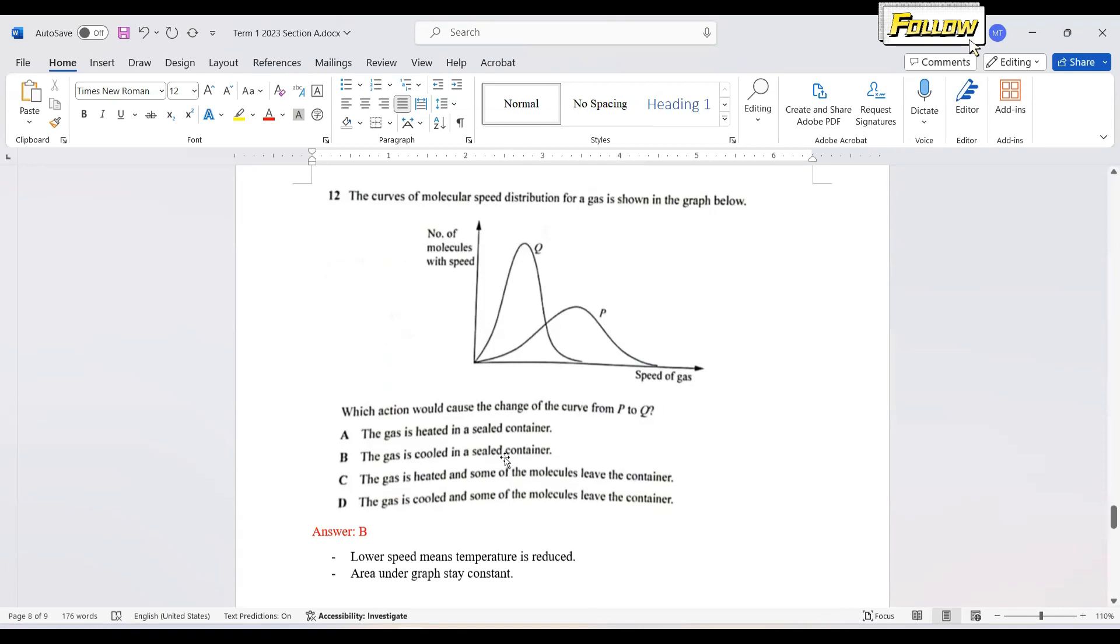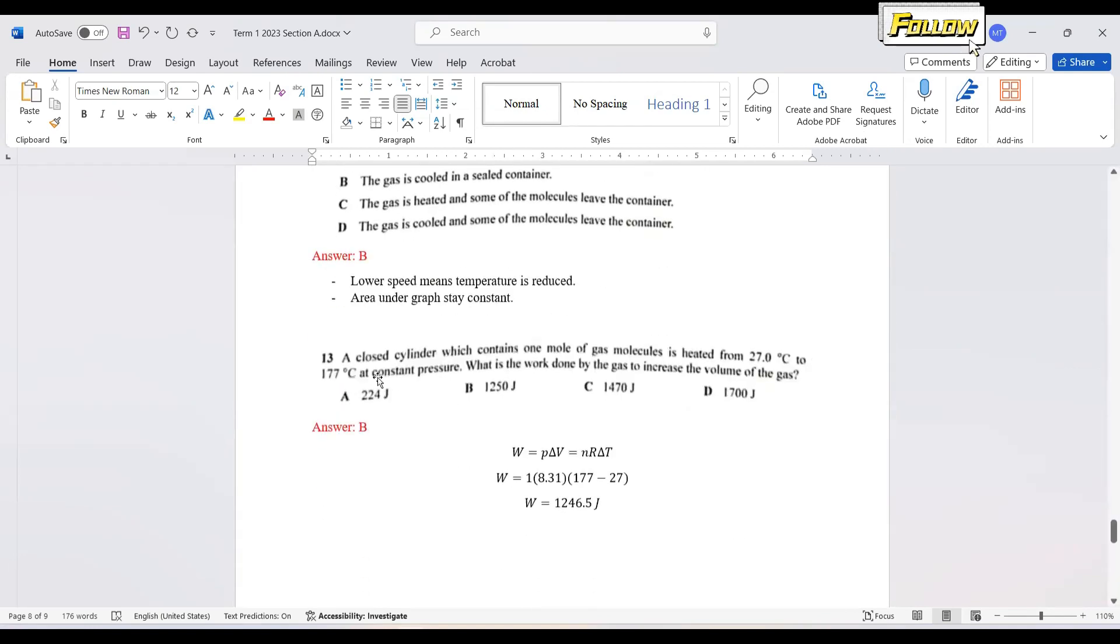We move on to question 13. A closed cylinder which contains one mole of gas molecule is heated from 27 to 177 degrees Celsius at constant pressure. What is the work done by the gas to increase the volume of the gas? Work done is P delta V, which is also equal to nR delta T. We have the number of molecules as one mole. The gas constant 8.31. And the change in temperature, 177 minus 27. So the answer here is B, which is almost 1,250 Joules.